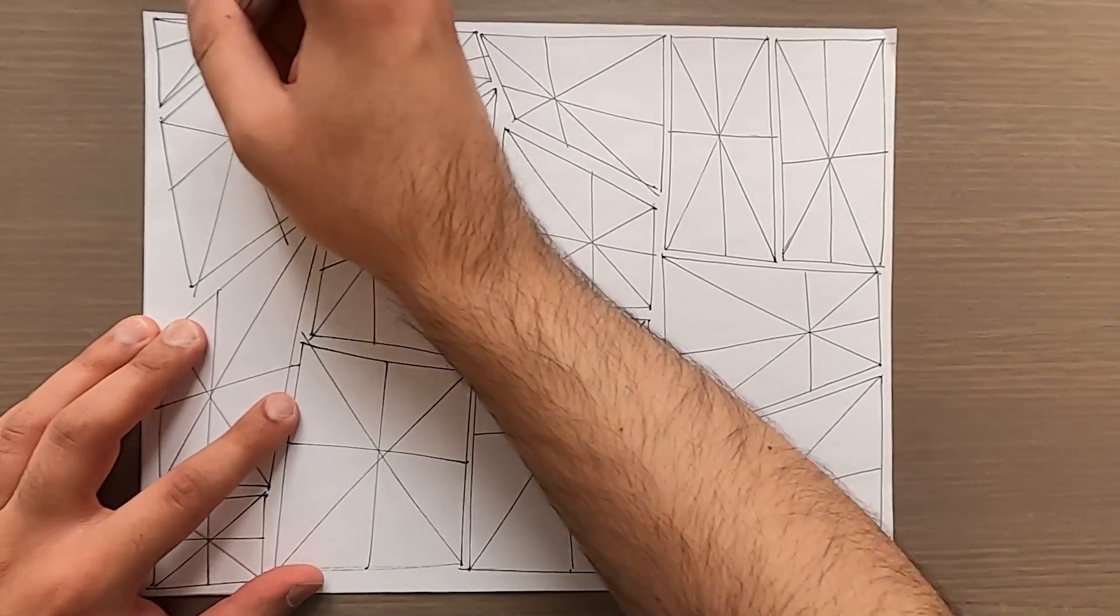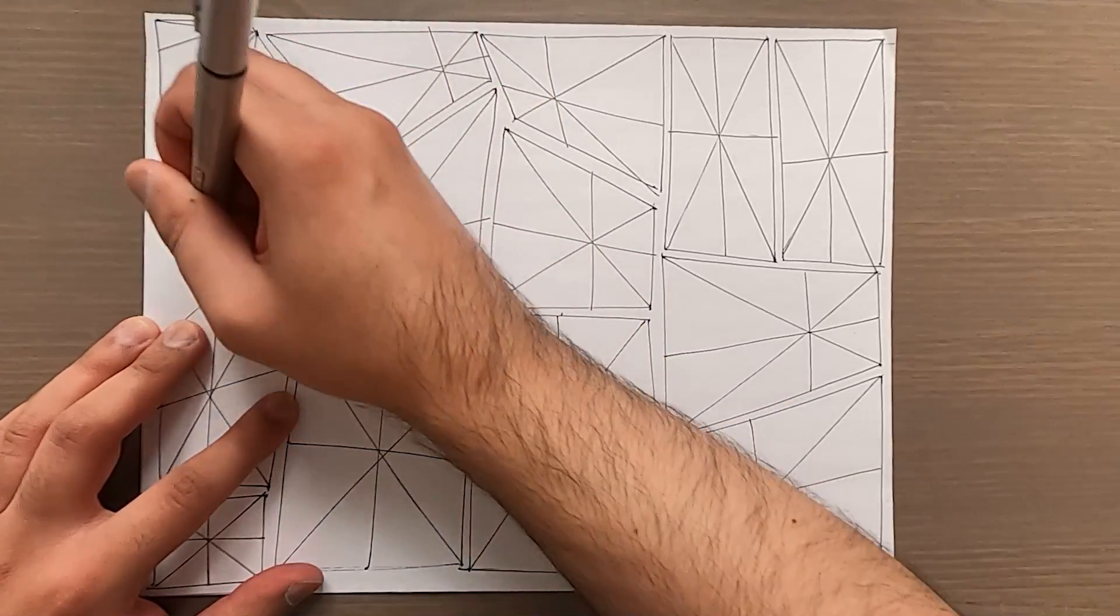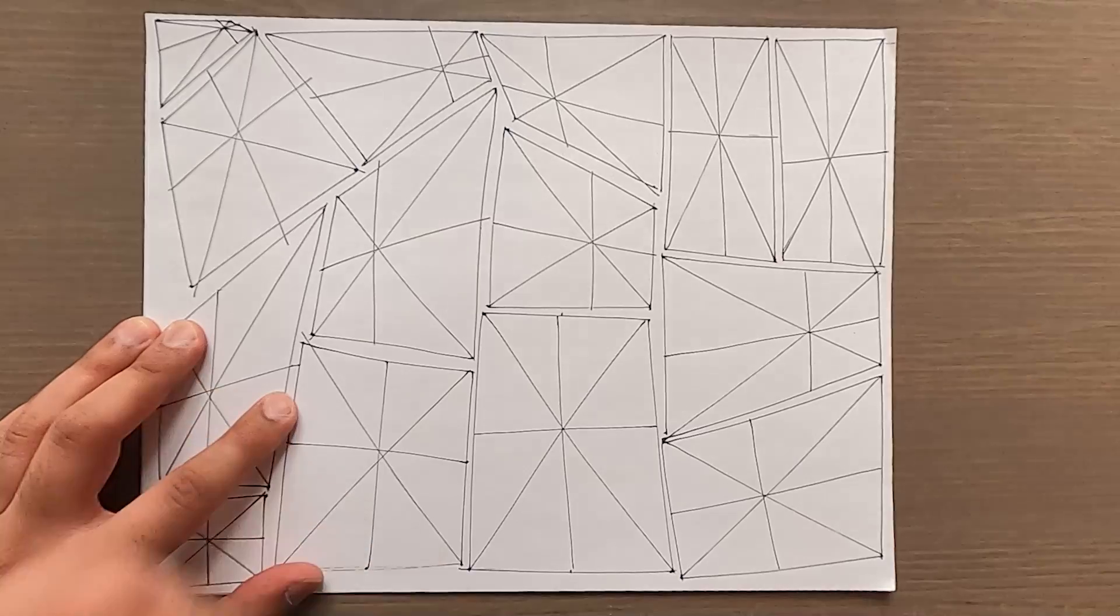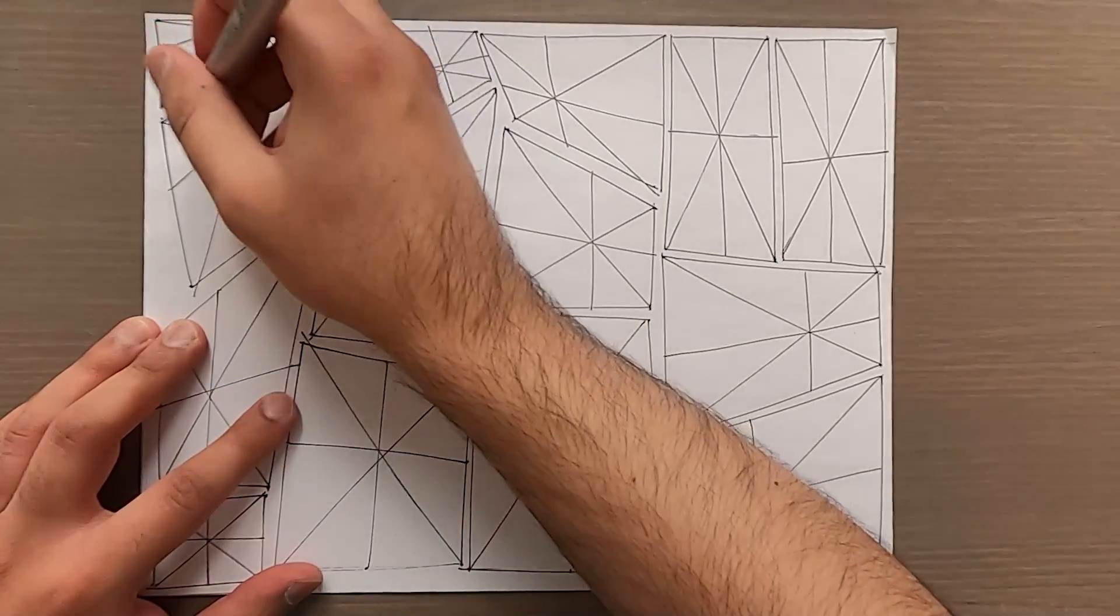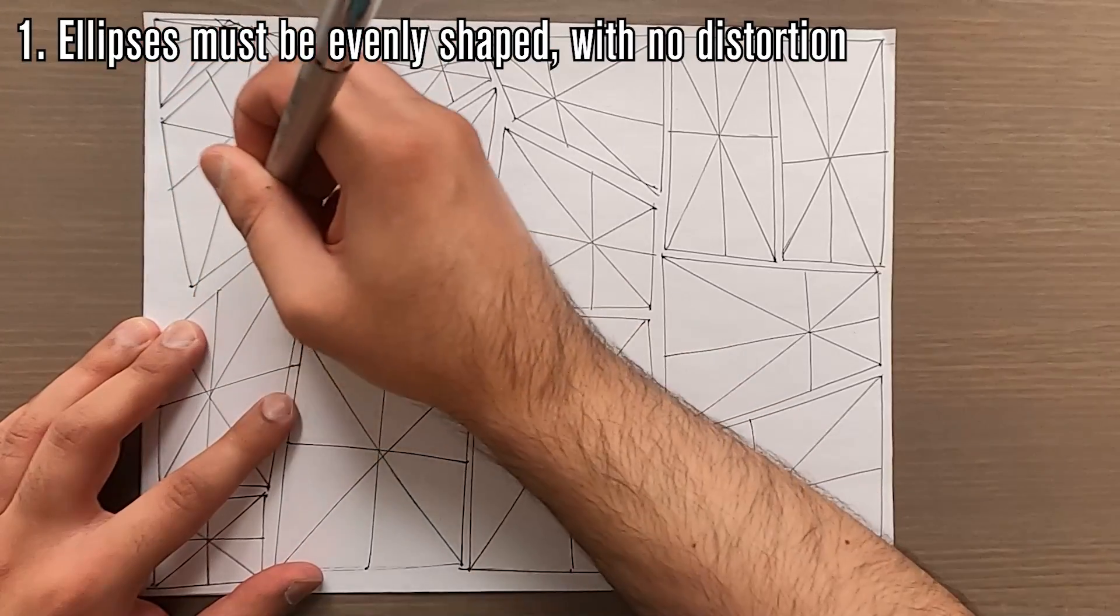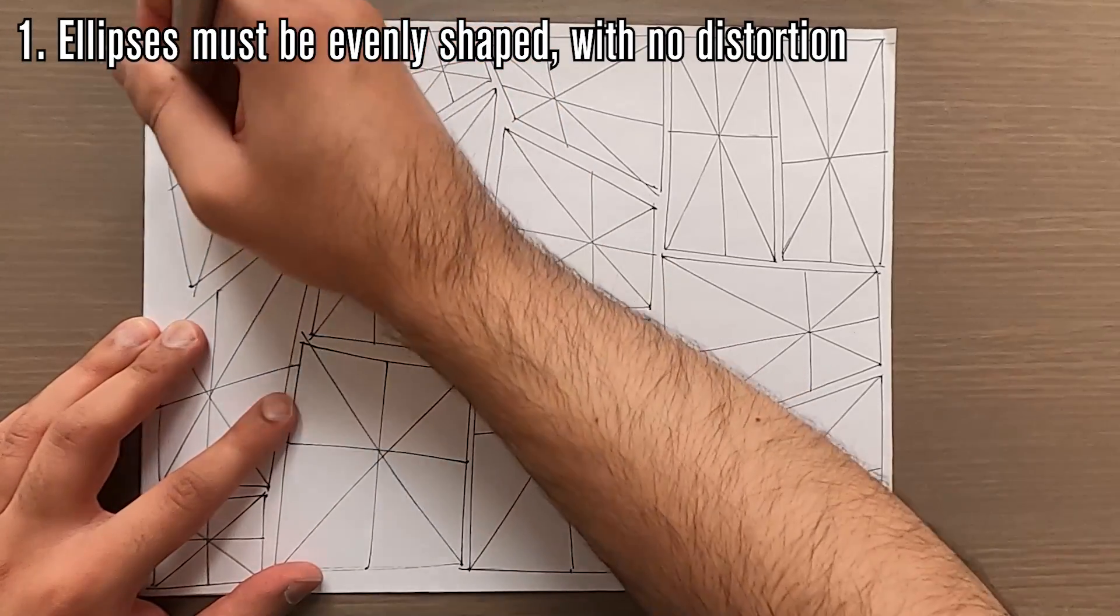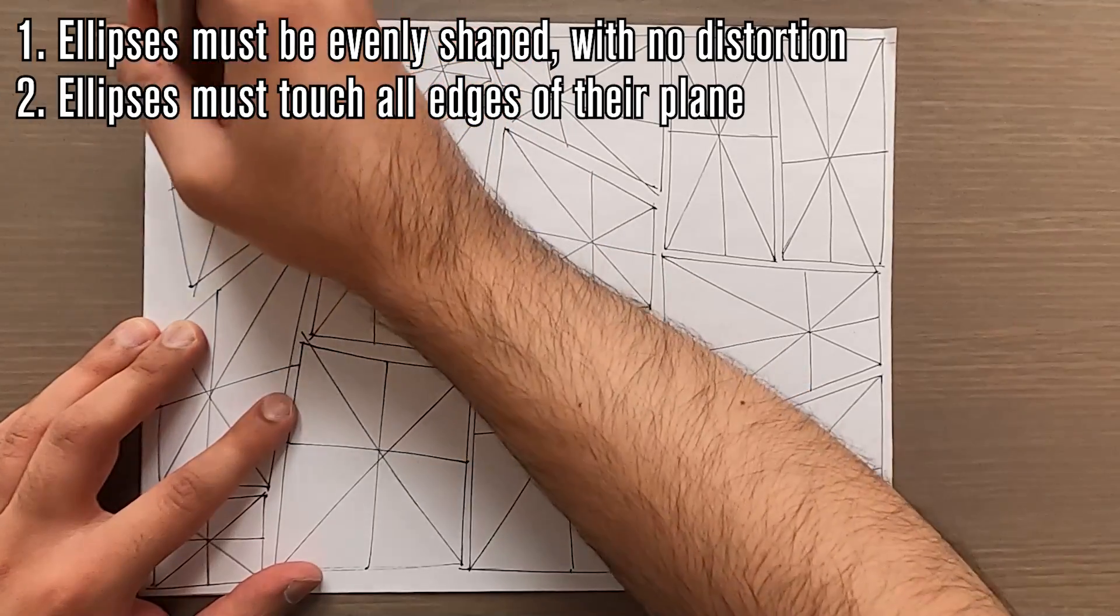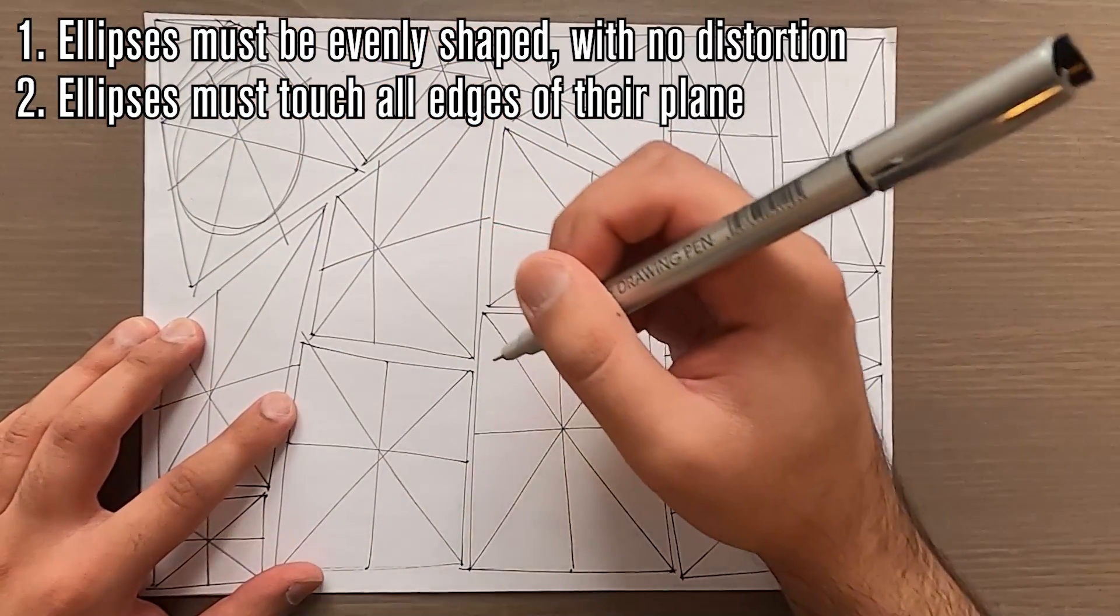What this exercise asks of you on paper is pretty simple and straightforward, but you will find that it's a fair bit more challenging than it looks. The goal here is to draw ellipses inside of planes such that the ellipses are confidently drawn and evenly shaped, maintaining an elliptical shape without distortion, and that the ellipses touch all four sides of their plane.